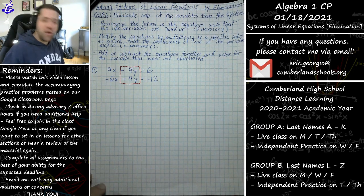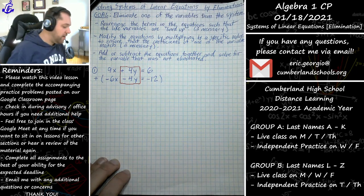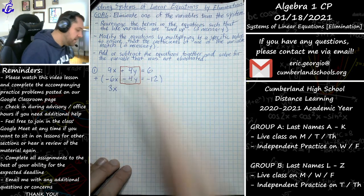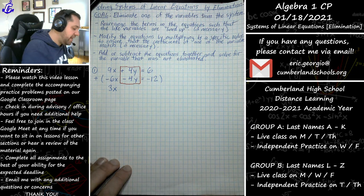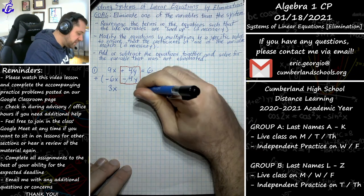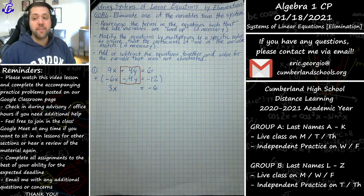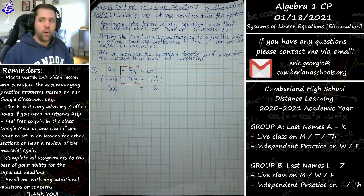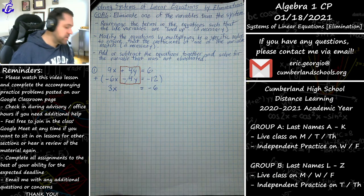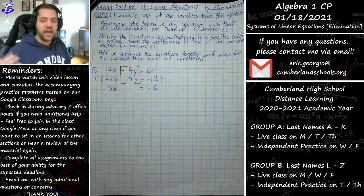Notice how nice this is when we actually do that. If I add these equations together, we get 9x plus negative 6x, which is 3x, and then 4y plus negative 4y cancels out. And we get 6 plus negative 12, which is negative 6. What we've done by combining our equations that way is eliminate one of the variables — and this is exactly what we mean by solving by elimination.